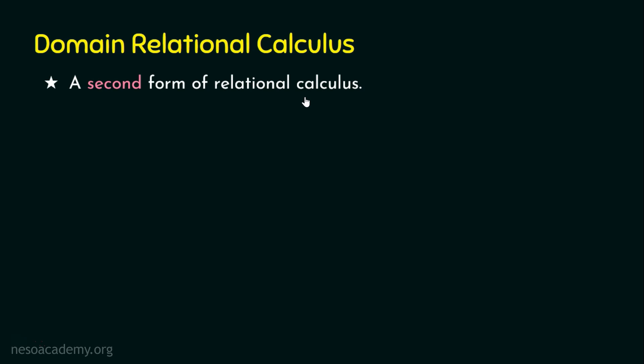How does tuple relational calculus differ from domain relational calculus? In domain relational calculus, we are going to focus on the domain variables — in other words, on the columns — by setting the domain variables on attributes. Tuple relational calculus retrieves the data row by row, whereas domain relational calculus retrieves the data column by column. The final output is still a relation containing rows and columns according to the data we are fetching.